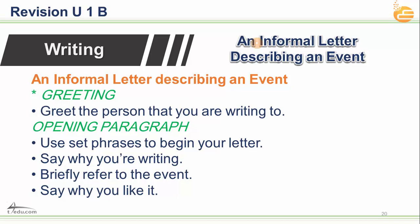Here are tips for writing an informal letter describing an event. Start with a greeting — greet the person you're writing to. Then write the opening paragraph: use set phrases to begin your letter, state why you're writing, briefly refer to the event, and say whether you liked or disliked it. For example: 'You won't believe what happened today — it was crazy. I'm writing to tell you about something terrible: I saw a terrible car accident at Exit 7.'